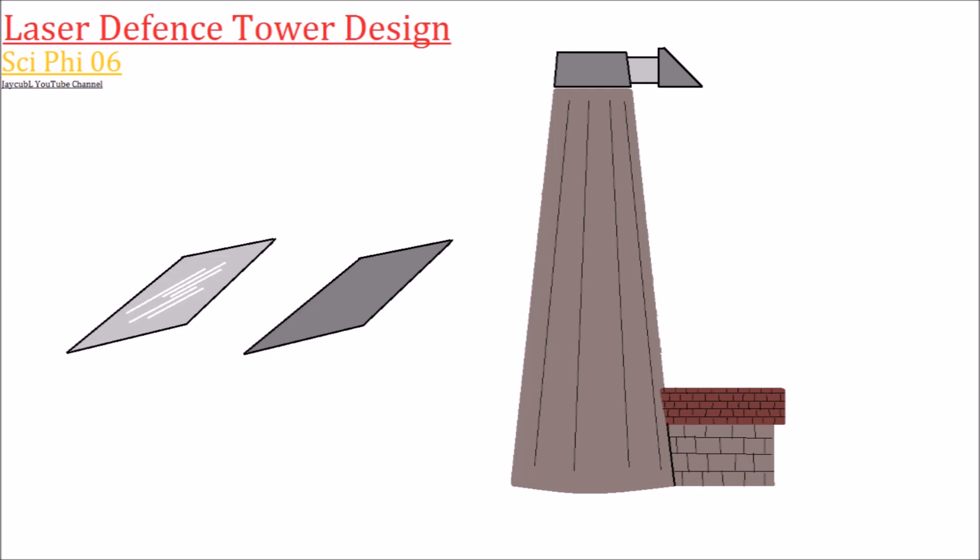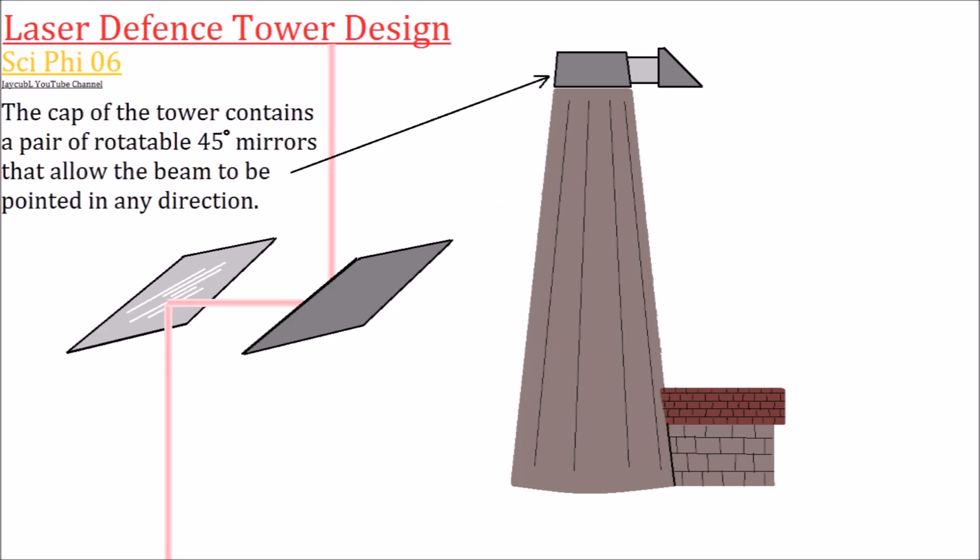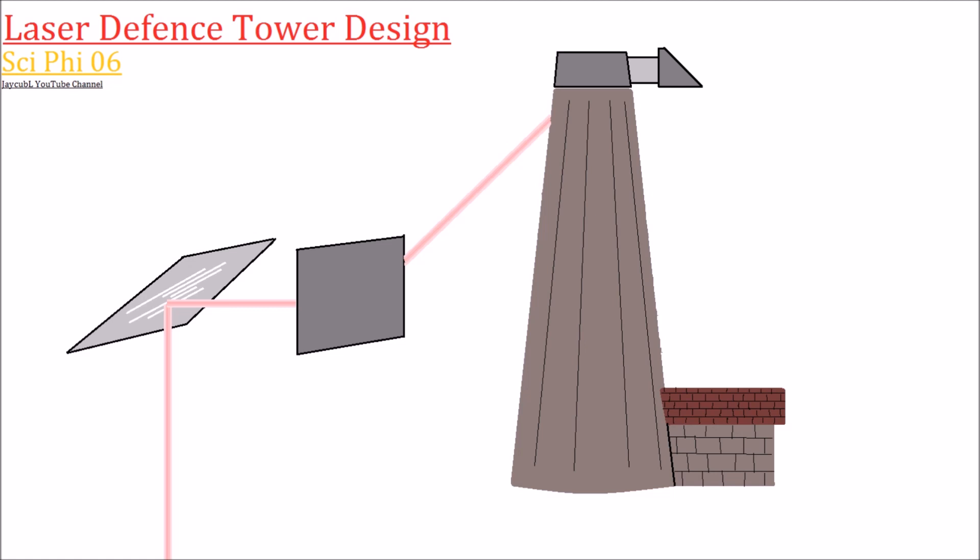The turret at the top houses two mirrors at 45 degree angles relative to level and the mirrors can pivot on two axes to direct the beam in any direction.